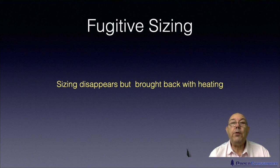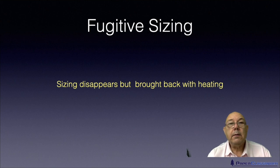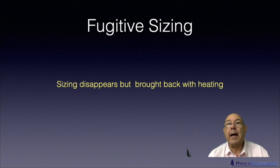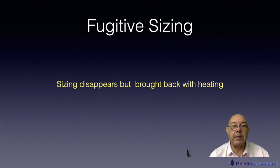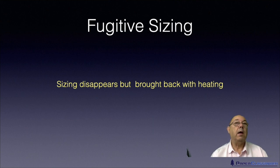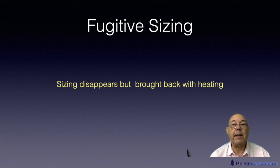Then we've got fugitive sizing. There used to be a TV programme on UK and American TV called The Fugitive, which was a guy who was always running away and hiding from the police. Fugitive sizing is a bit like that. You make some paper with a sizing agent in, you measure the Cobb value and it's okay — it's good. And then maybe a few days or weeks later you come and measure the degree of sizing again, and boom — no sizing. The Cobb value is sky high.